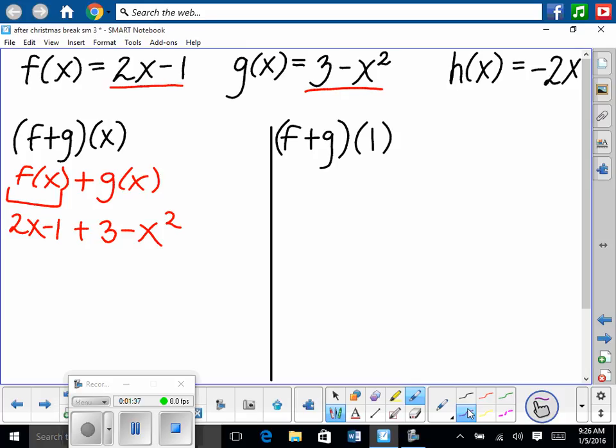Now from there, you're going to write it in standard form. So combine all like terms. Starting with the highest degree, it's x². In fact, it's -x². No other x² term, so I still have -x². Then 2x, no other x terms, and it was positive, so positive 2x. And then -1 + 3 is 2, positive 2, so plus 2. This is our answer. That's (f+g)(x).